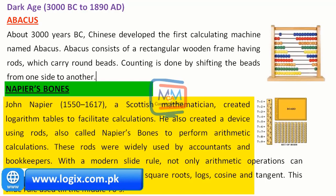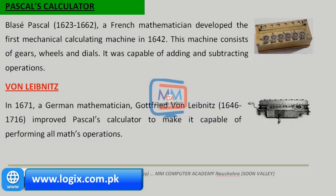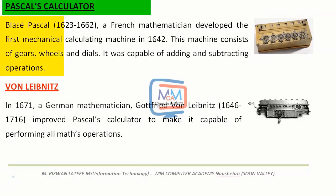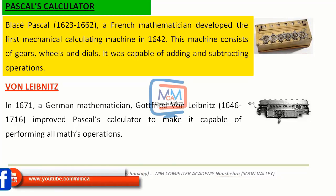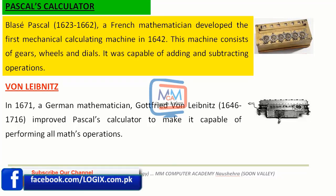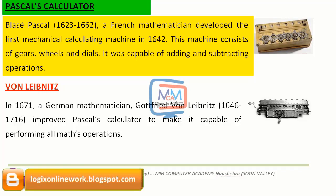The next one is Pascal's Calculator. Blaise Pascal, 1623 to 1662, a French mathematician, developed the first mathematical calculating machine in 1642. This machine consists of gears, wheels, and dials. It was capable of adding and subtracting operations.